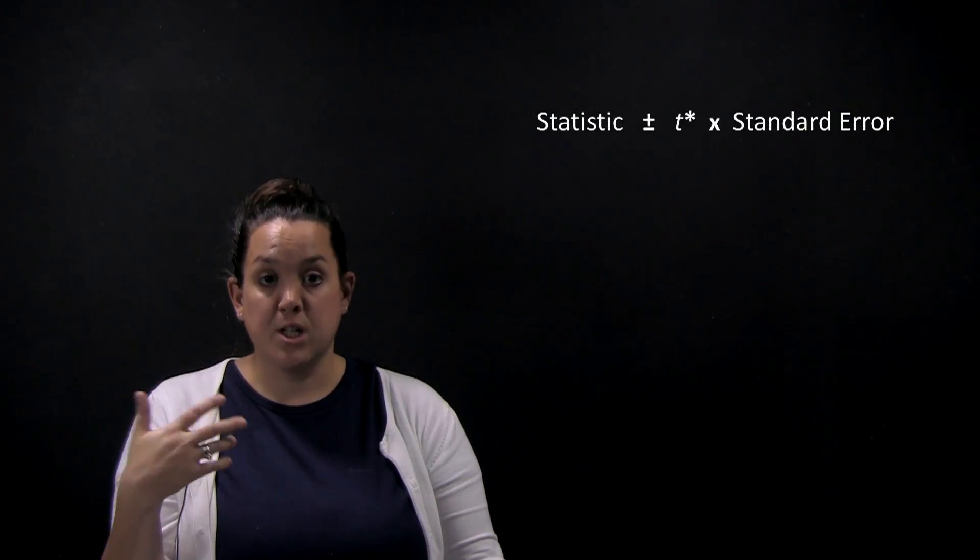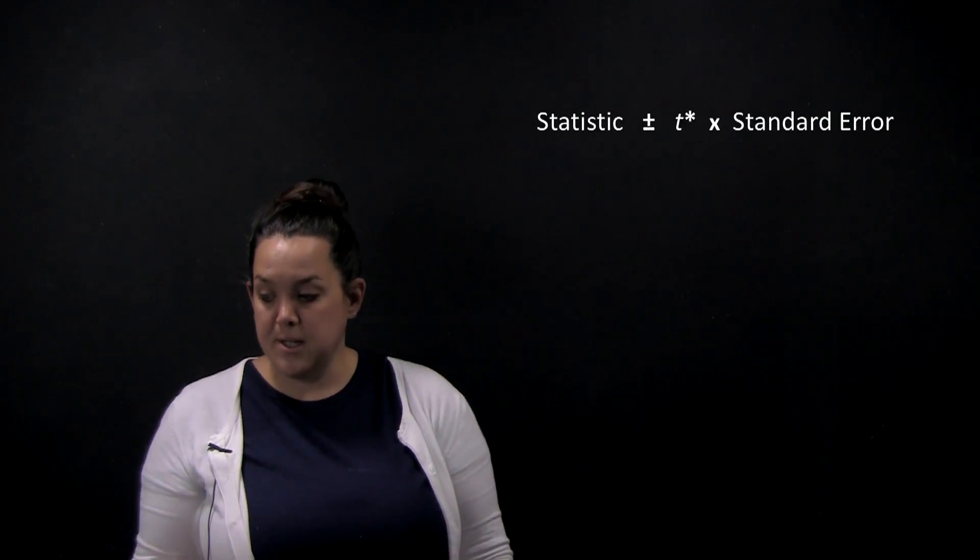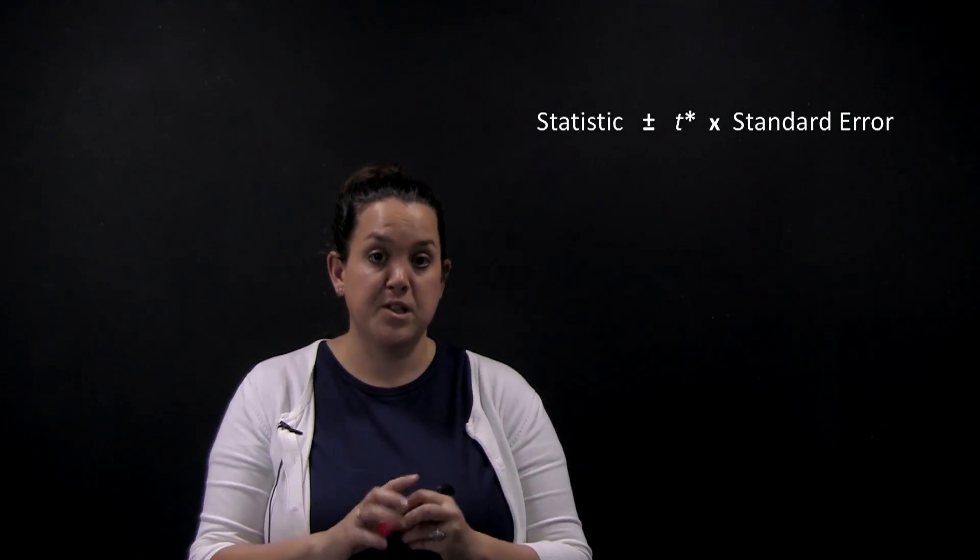So we have a generic formula for a confidence interval, which is a statistic plus or minus a margin of error. Now though, we'll make it more specific to a confidence interval for mu, which is going to use a statistic plus or minus t star times standard error.